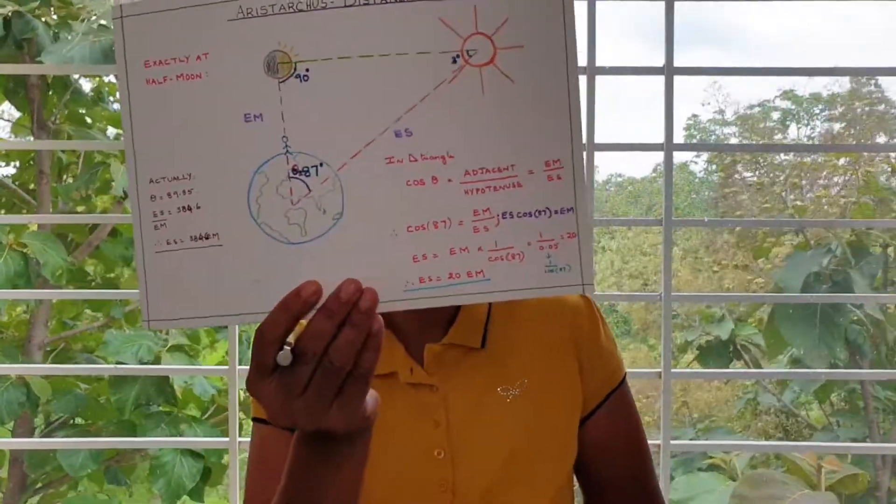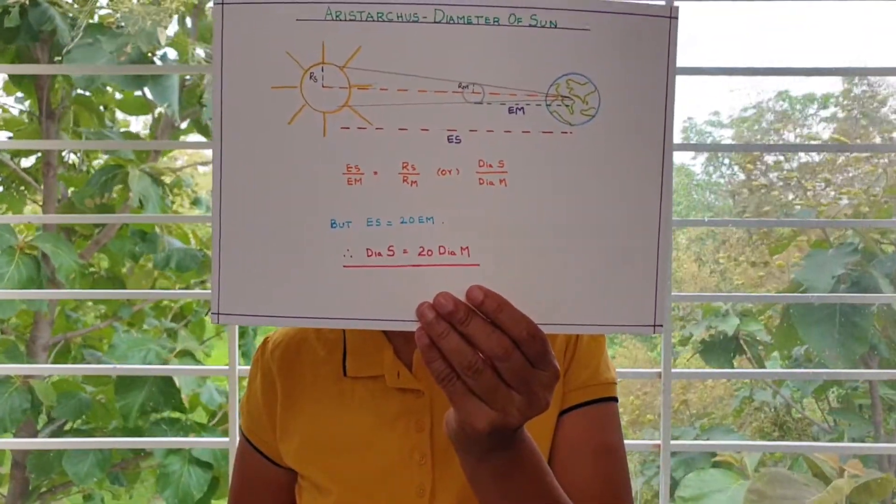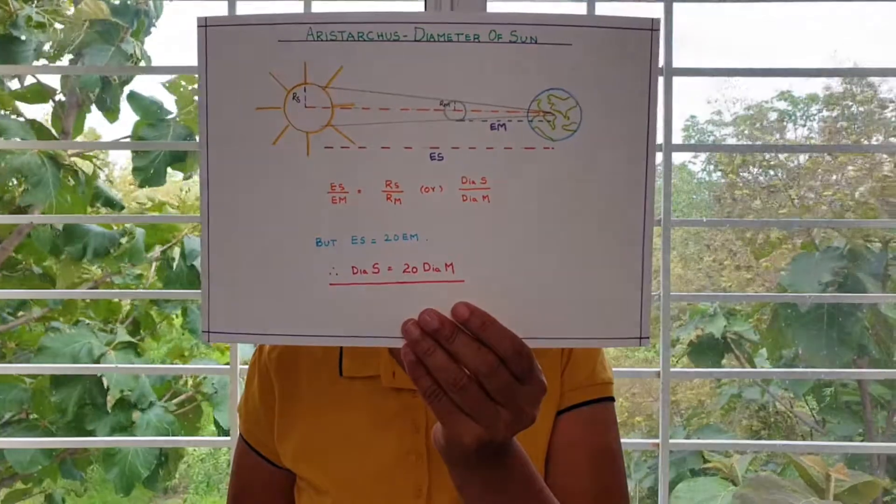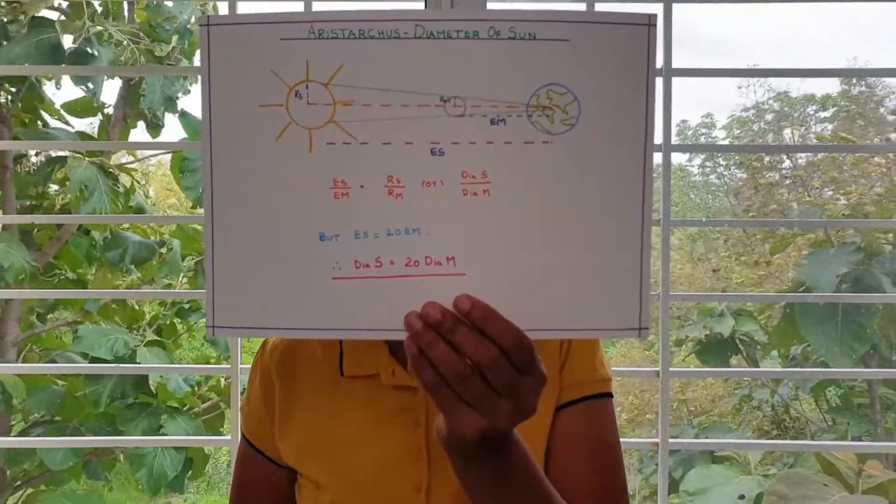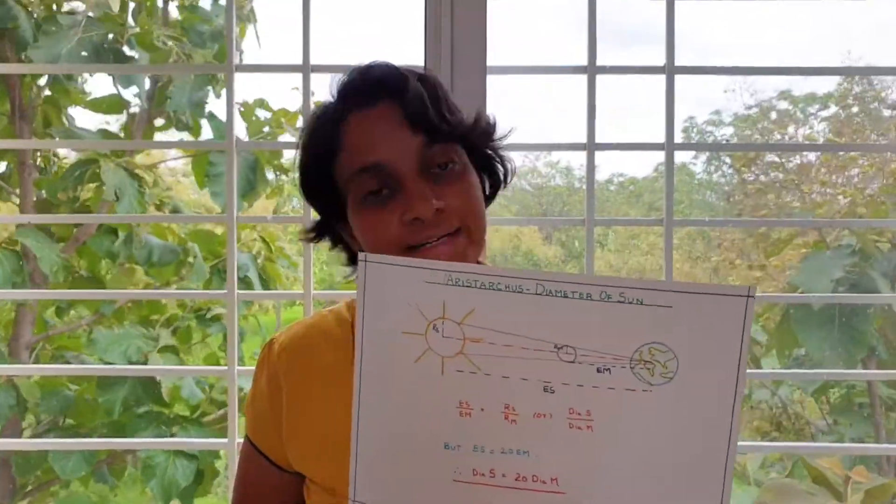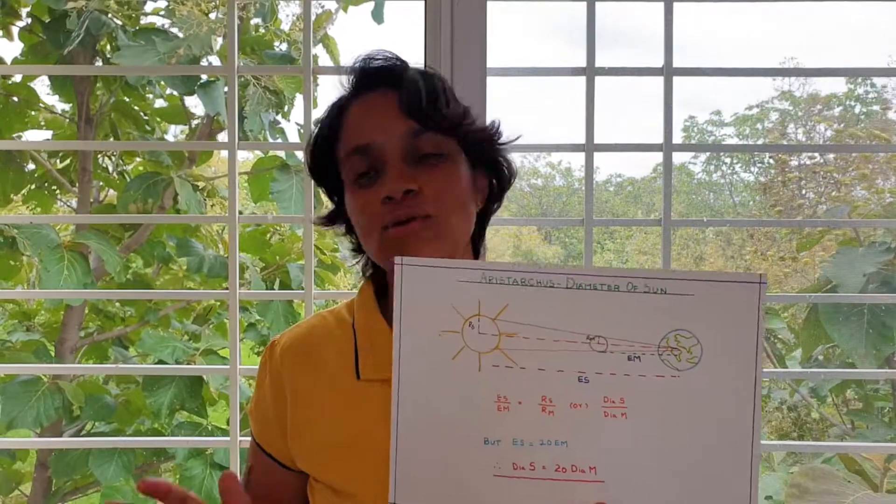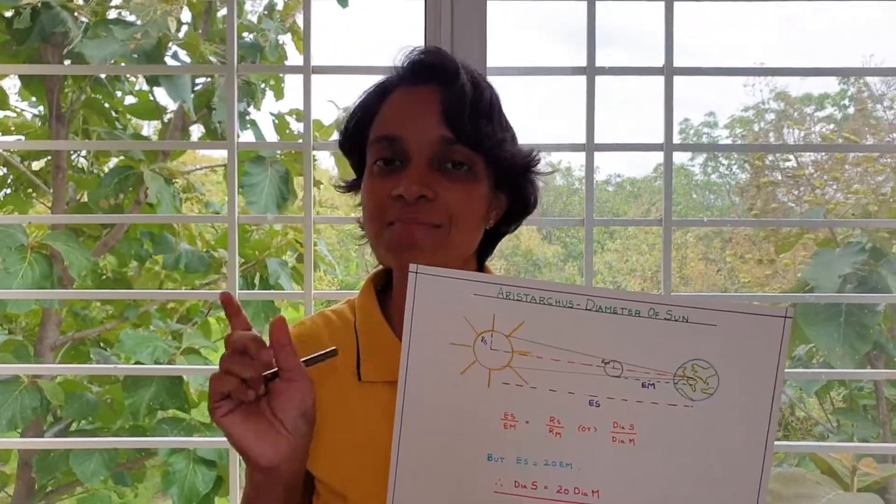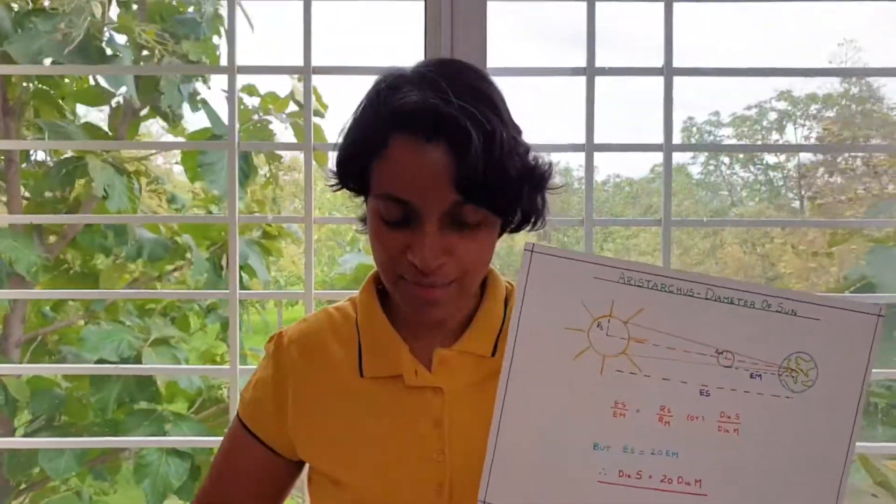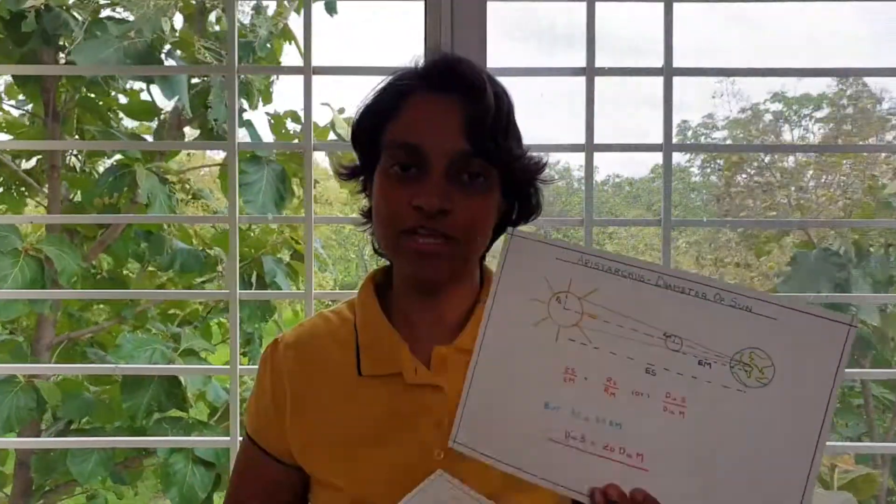In today's calculation also we will use this equation because again we are here with ES by EM equals diameter sun by diameter moon. And we already know ES is equal to 20 times EM. So therefore diameter of sun is equal to 20 times the diameter of moon. No numbers again. Simple logic, simple experiment, simple conclusion. Diameter of sun is 20 times the diameter of the moon based on yesterday's experiment or the logic of yesterday's experiment.